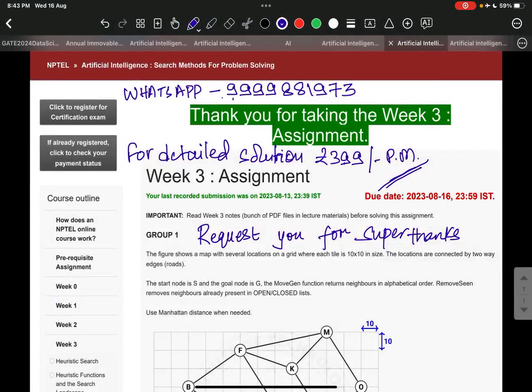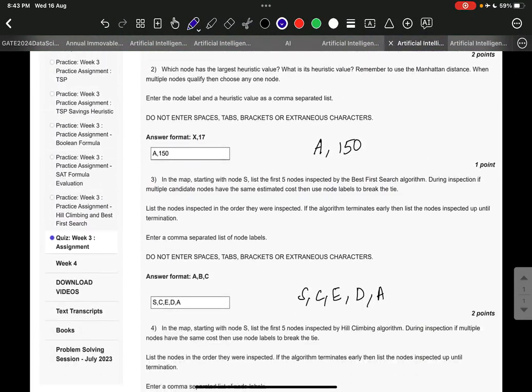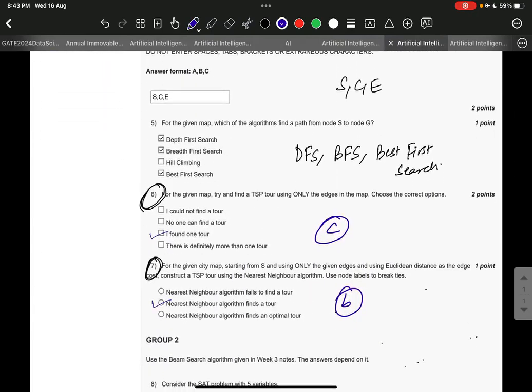Hello everyone, this is the week 3 solution of artificial intelligence search methods for problem solving. We have already discussed these questions, but the right answer to question number six is option number C and question number seven is option number B. It took us time to understand the language of the question setter.